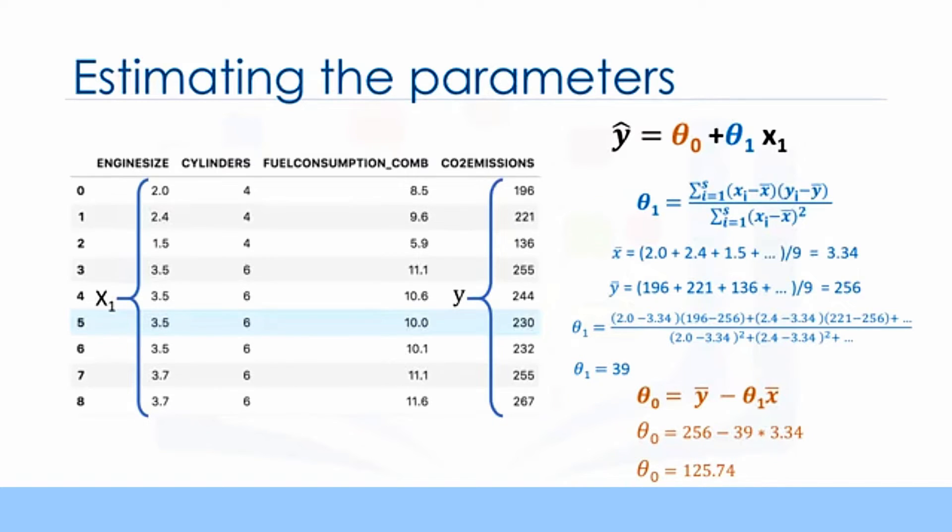As a side note, you really don't need to remember the formula for calculating these parameters, as most of the libraries used for machine learning in Python, R, and Scala can easily find these parameters for you, but it's always good to understand how it works. Now, we can write down the polynomial of the line. So, we know how to find the best fit for our data and its equation.